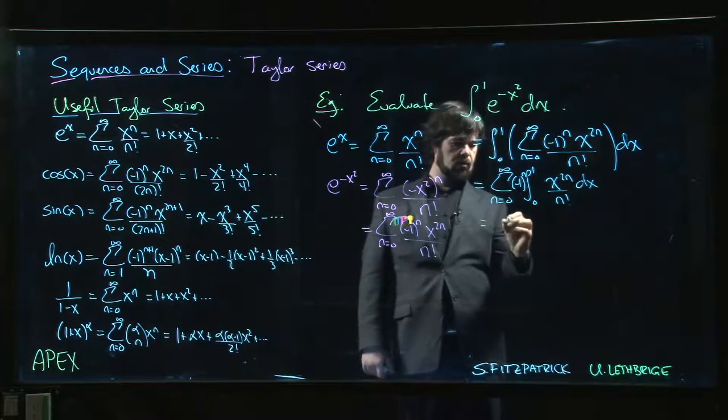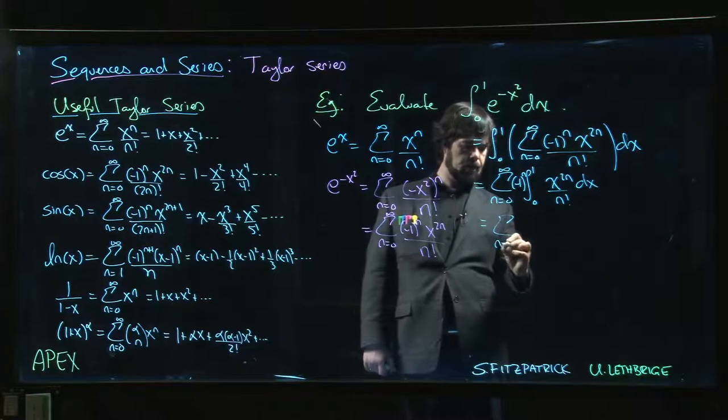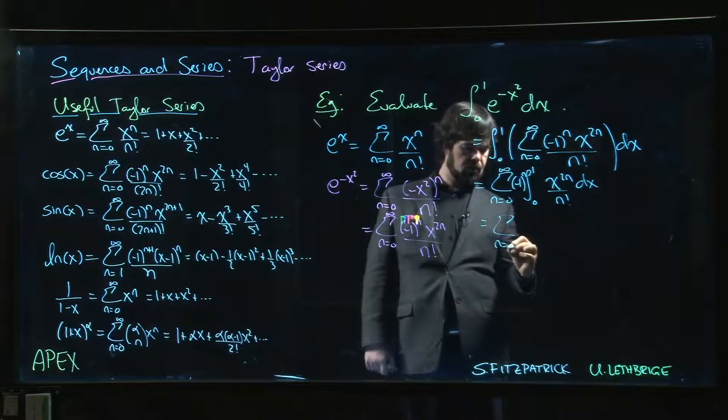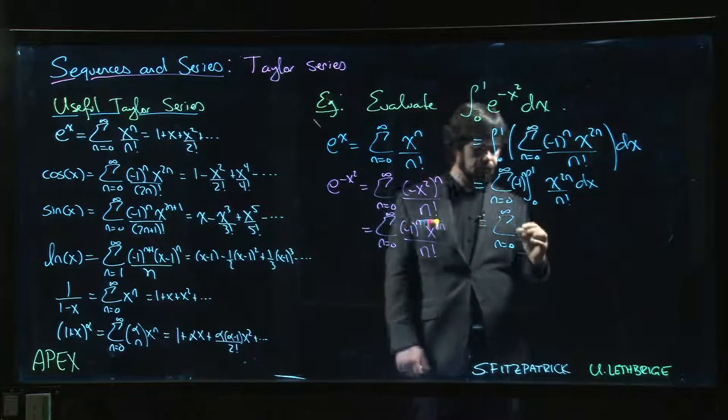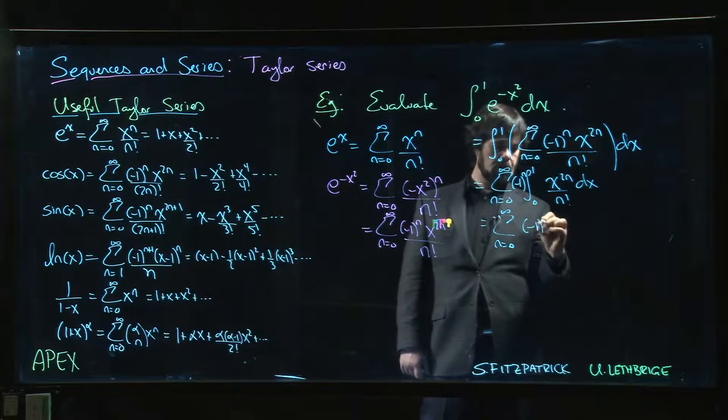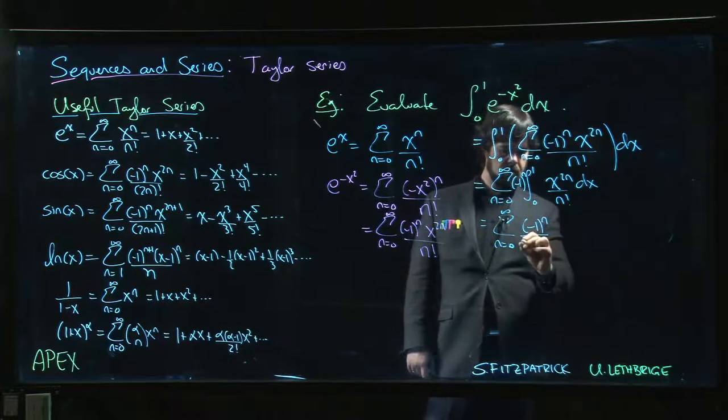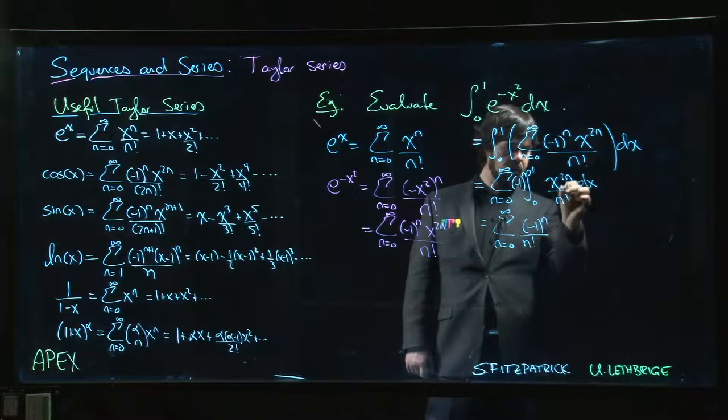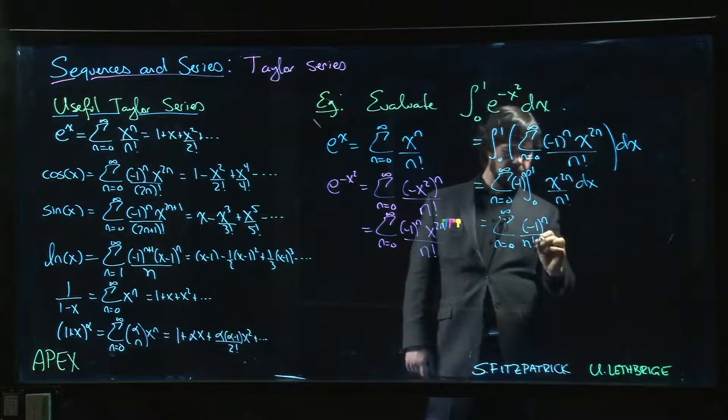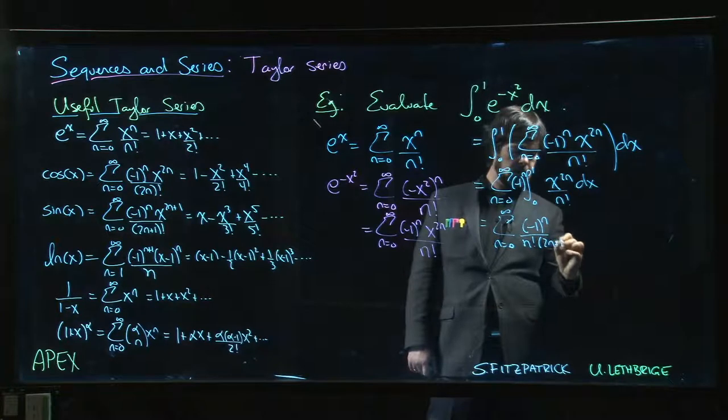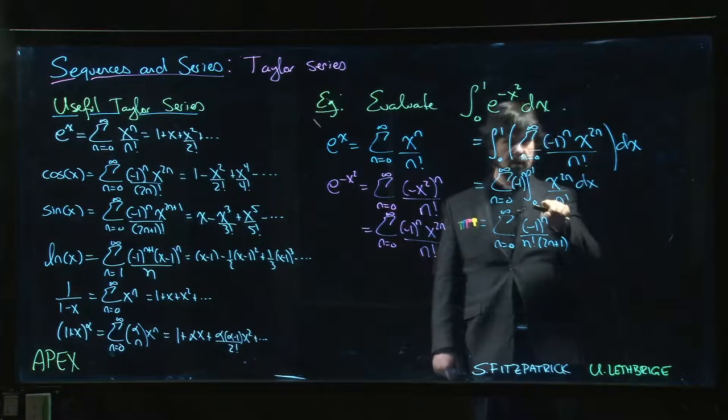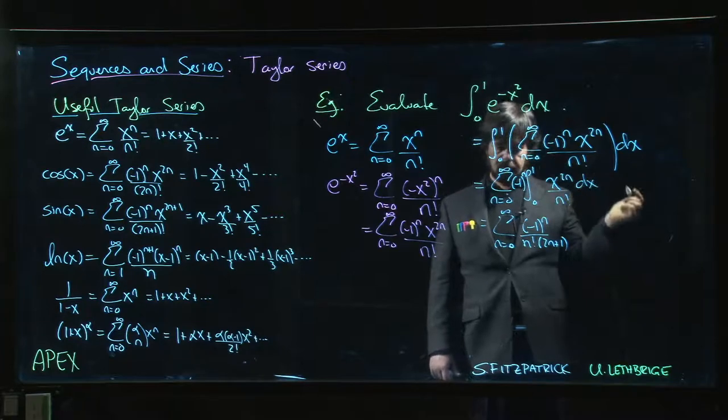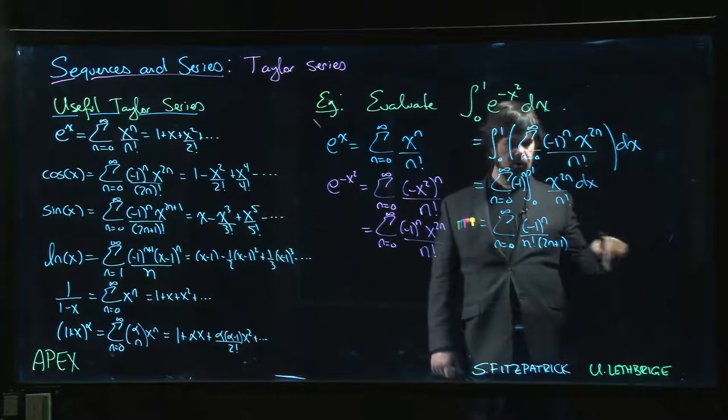So what do I get? I get the sum from n going from 0 to infinity of minus 1 to the n over n factorial. Now we just get the antiderivative: 2n plus 1. We get x to the 2n plus 1 divided by 2n plus 1. Power rule for antiderivatives. Evaluate from 0 to 1.